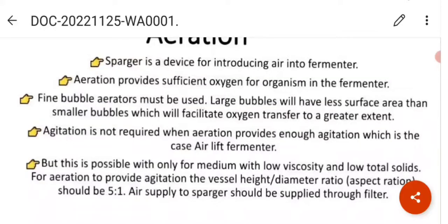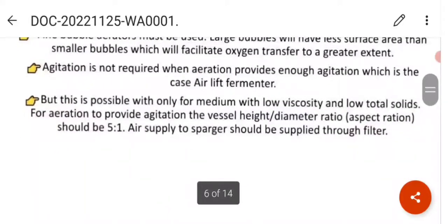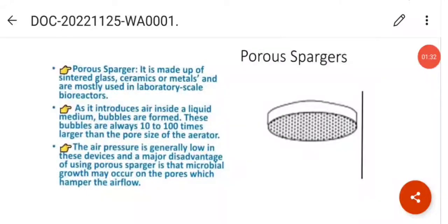Agitation is not required when aeration provides enough agitation, which is in the case of the air lift fermenter. But this is possible only for the medium with low viscosity and low total solids. For aeration to provide agitation, the vessel height or diameter ratio should be 5 is to 1. Air supply to the sparger should be supplied through the filters.